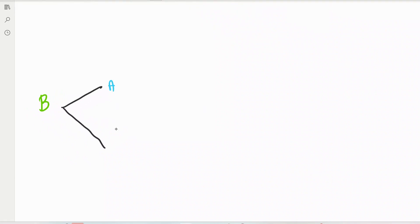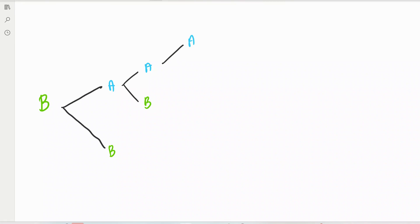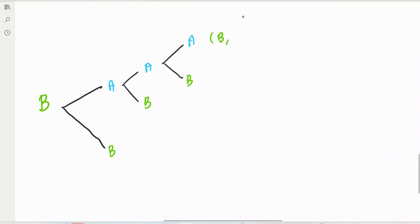Starting with B — first set B wins. Second can be A or B. If B wins again, still need more sets. Then A or B. For branch B, A, A, A — three wins for Ali, we stop. For branch B, A, A, B — no winner after four sets, need fifth set: either A wins or B wins.